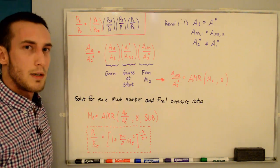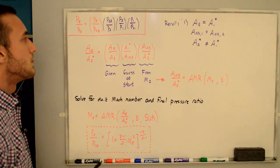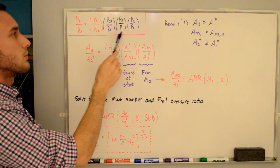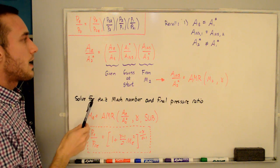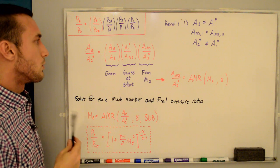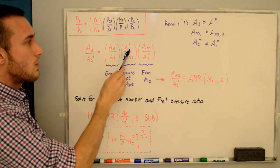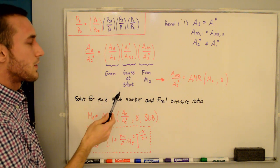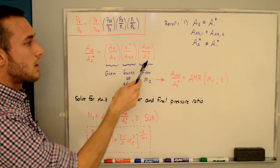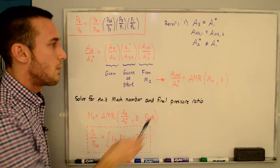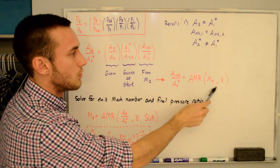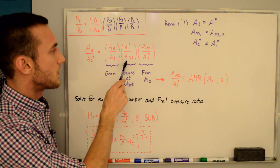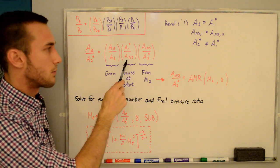The last term is the most confusing. We start by computing AE over A2 star: AE/A2* = (AE/AT) × (A1*/ANS) × (ANS/A2*). AE/AT is the given area ratio of 3. AT equals A1 star, so we write A1 star over ANS — the inverse of the shock area ratio we guessed. ANS/A2* comes from the area-Mach number relation using M2. Multiplying these three known quantities gives AE/A2*. Note the initial guess was ANS/A1 star, so flip it before multiplying through.